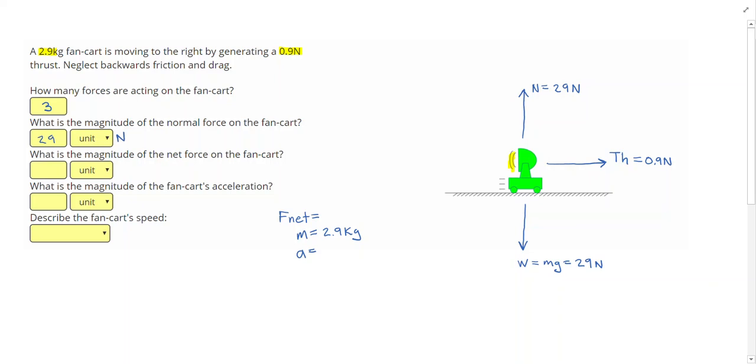And then it says what is the magnitude of the net force on the fan cart. To figure out our net force, we first cross out any forces that balance. So I know the weight and the normal force balance out. Then look at my forces acting forward and acting backwards, which are the forces that are left over. In this case, I only have one force left over. That's the thrust. So my net force is going to be 0.9 newtons, which is also our third answer.